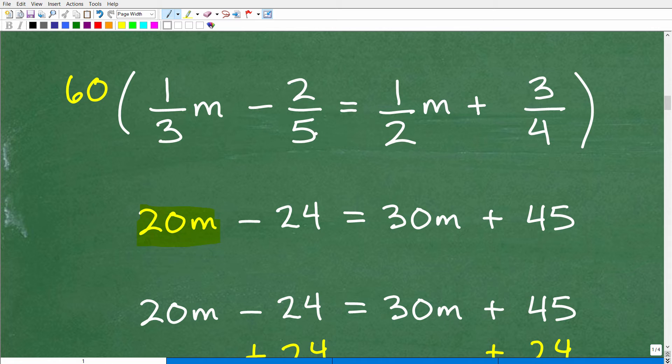But, let's go ahead and continue on. So, 5 goes into 60 what? Well, 5 goes into 60, 12. 12 times 2 is 24. So, that's a negative 24. So, now, we'll move on to 2. 2 goes into 60 what? Well, that's 30. So, that'll be 30 times this 1 M or 1 half M times 60 is 30 M. And then, here we have 4. 4 goes into 60 what? Well, that would be 15. So, 15 times 3 is 45. So, that's that right there.